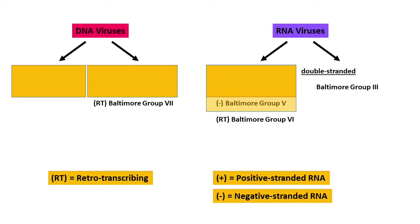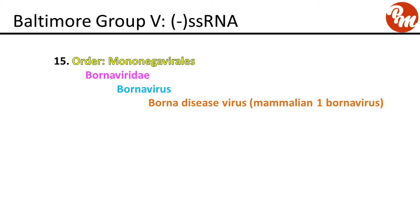Now the negative sense single-stranded RNA viruses, Baltimore Group 5. Order mononegavirales, family Bornaviridae, genus bornavirus: the borna disease virus, also called mammalian 1 borna virus.